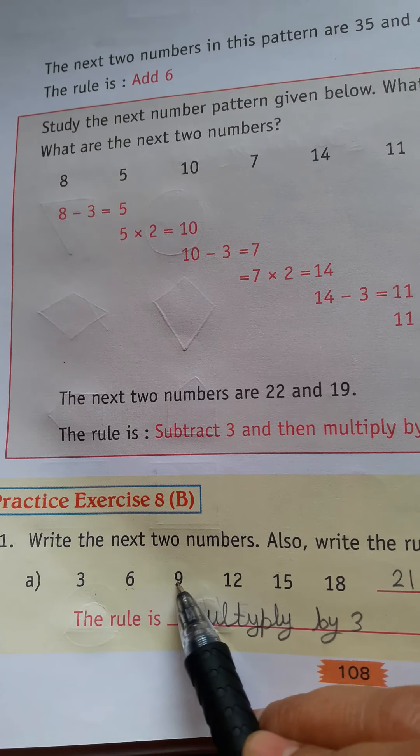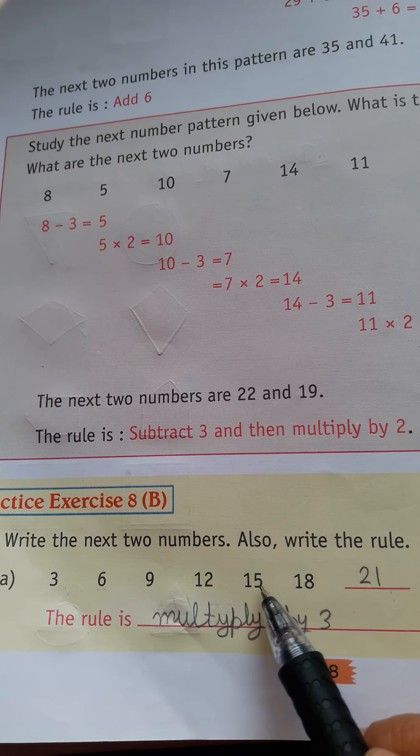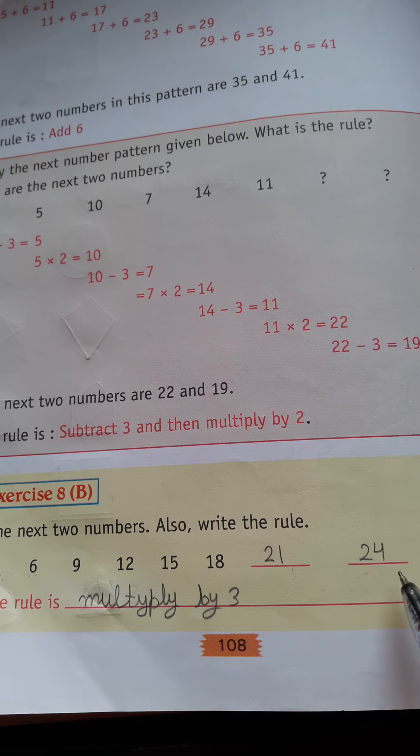3, 6, 9. 3 times 1 is 3, 3 times 2 is 6, 3 times 3 is 9, 3 times 4 is 12, 3 times 5 is 15, 3 times 6 is 18, 3 times 7 is 21. So 3 times 8 is 24.